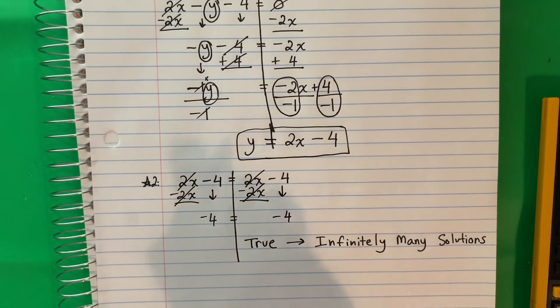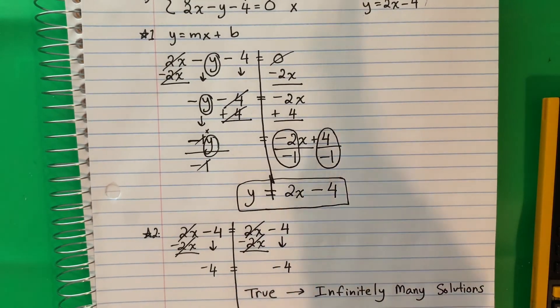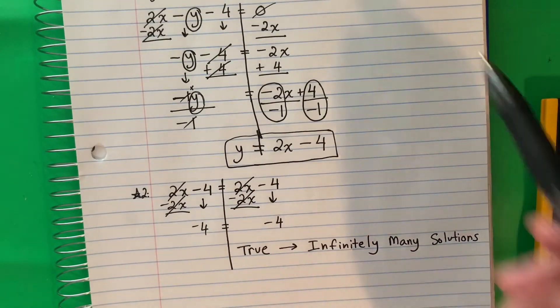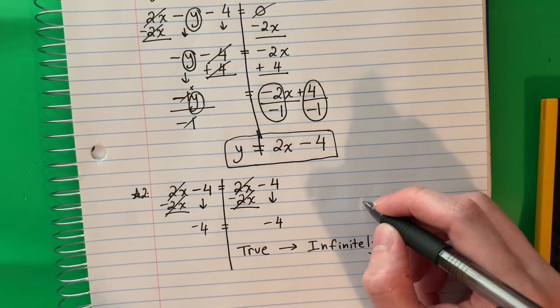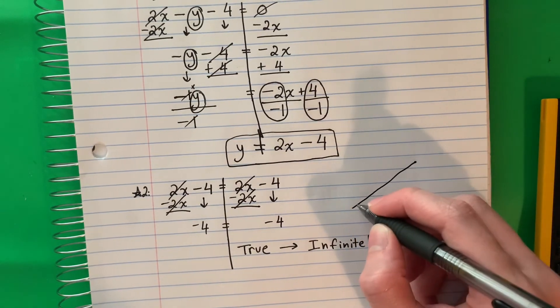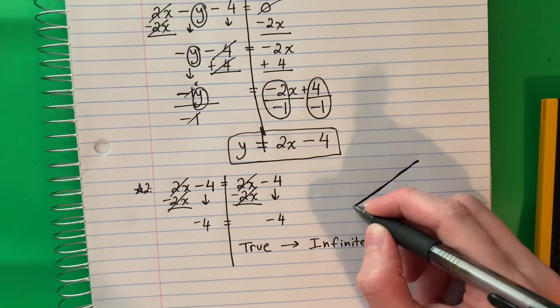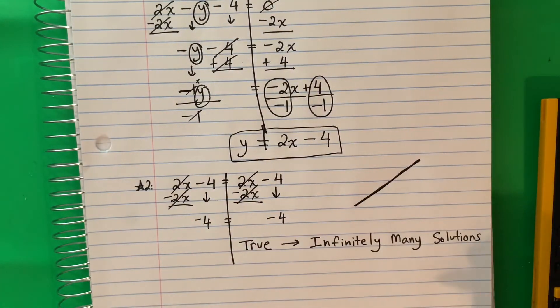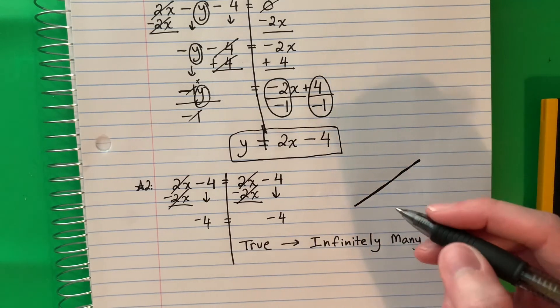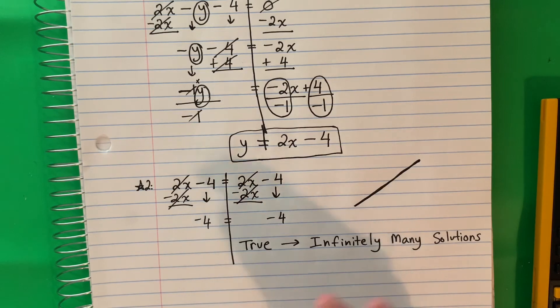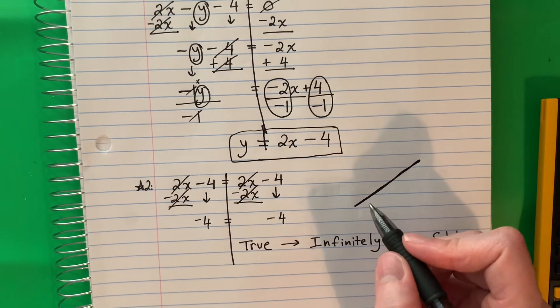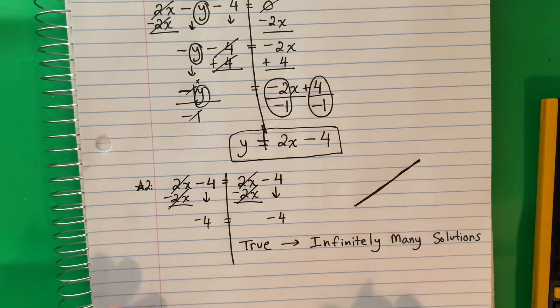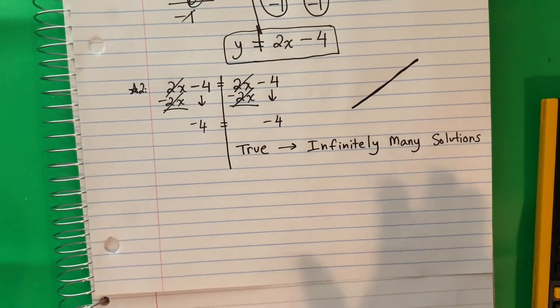So what this means is that this line, these two equations are the same line. So basically when you graph it, they're going to be in the same place. Two lines on top of each other in the same place. So every point will work. Well, not every point, but a lot of points will work that are on the line. There's more than one answer.